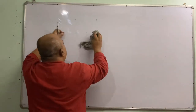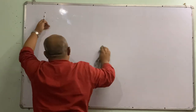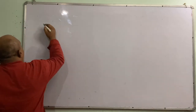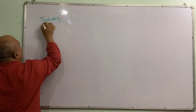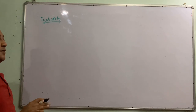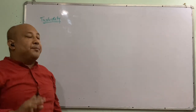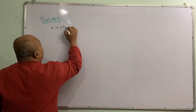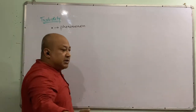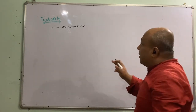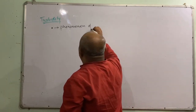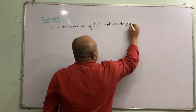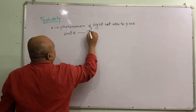The next topic is turbidity. I am not going to explain much about what turbidity is, but rather how to estimate it. Many students confuse what turbidity is — turbidity is not a colloid. Turbidity is a phenomenon: the phenomenon of light not being able to pass through water. The cause of turbidity is due to the presence of colloids.